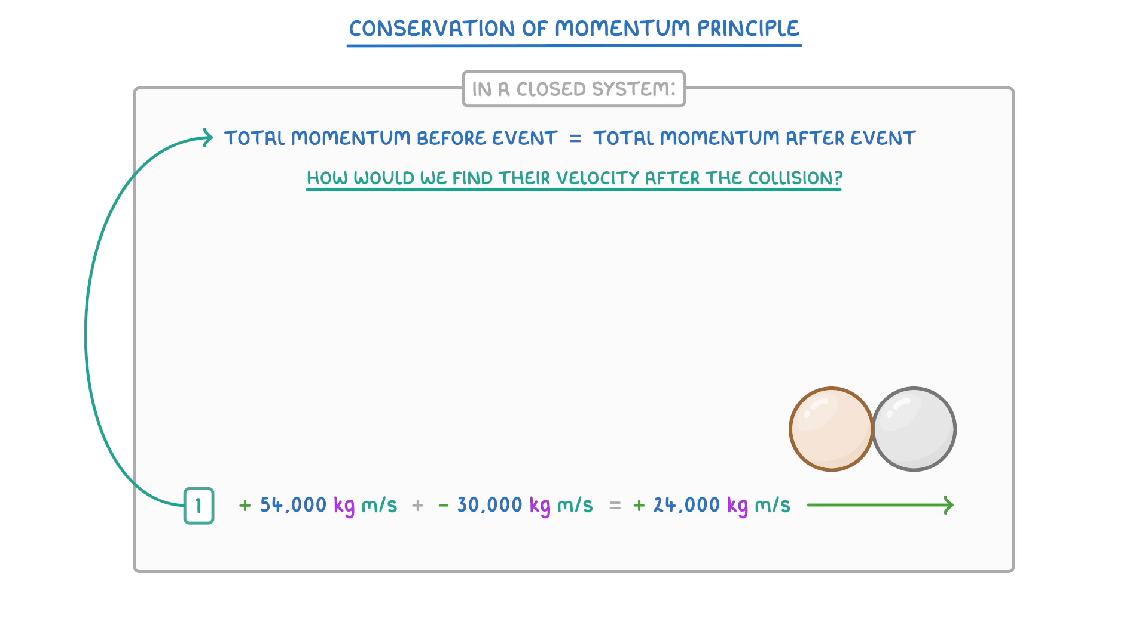And because they're both moving together, we can now treat them as a single large particle. So to work out their shared velocity, all we have to do is rearrange our momentum equation to show that velocity equals momentum divided by mass.